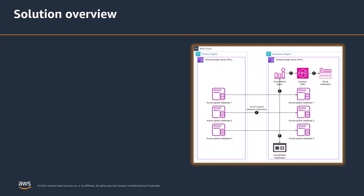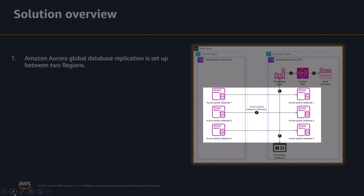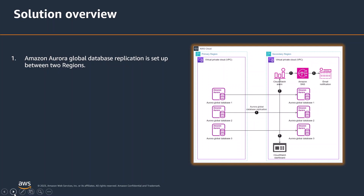Now let's dive into an overview of our solution. We will explore each component as we progress through this video. First, we have a list of Amazon Aurora Global Databases which are replicating from one region to another. In the architecture diagram, you can see that we have three Aurora Global Databases and these databases are replicating from the primary region to the secondary region.